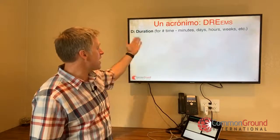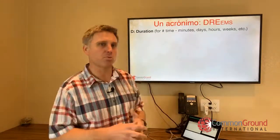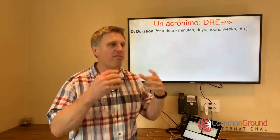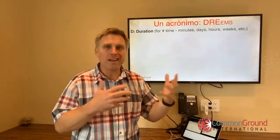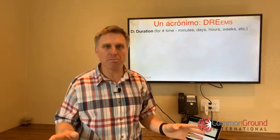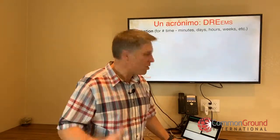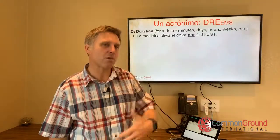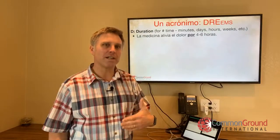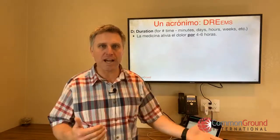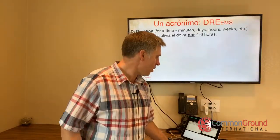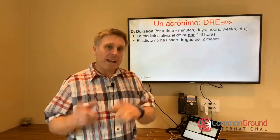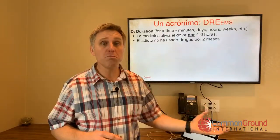D is Duration. Anytime you're talking about a duration — whether that's minutes, days, months, or years — if you're saying "for" a particular length of time, it's always going to be por, never para. Por ejemplo: "La medicina alivia el dolor por cuatro a seis horas." The medicine alleviates the pain for four to six hours — a duration of time. Another example: "El adicto no ha usado drogas por dos meses." The addict hasn't used drugs for two months.